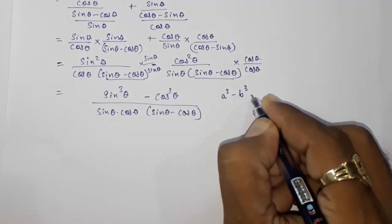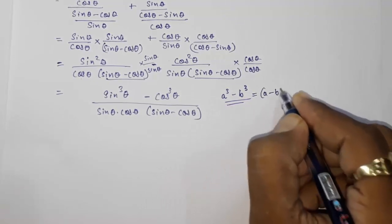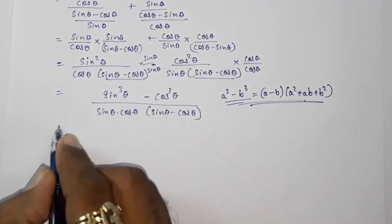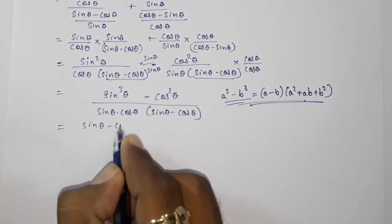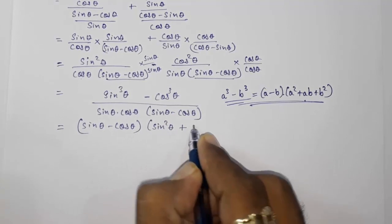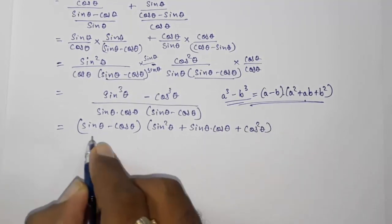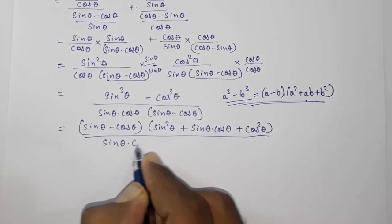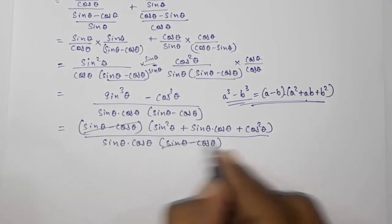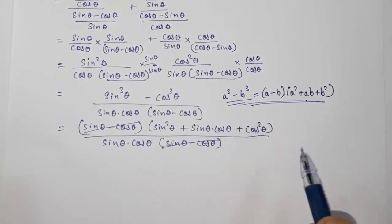Now here we have to use the identity a³ minus b³ equals a minus b into bracket a² plus ab plus b². So sin³ θ minus cos³ θ becomes sin θ minus cos θ into bracket sin² θ plus sin θ cos θ plus cos² θ. The bracket sin θ minus cos θ cancels with the same factor in the denominator. And sin² θ plus cos² θ equals 1, so the numerator simplifies to 1 plus sin θ into cos θ.